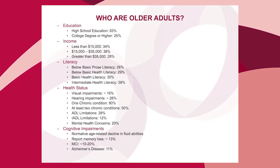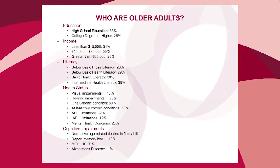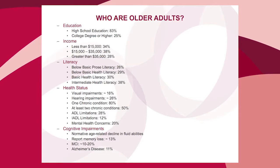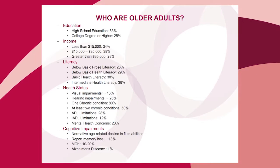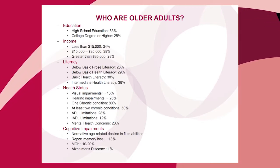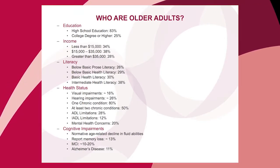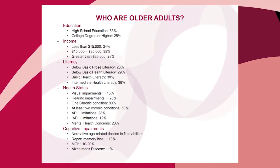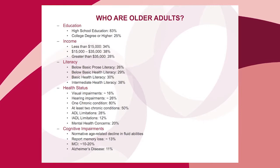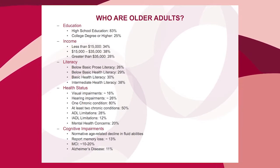On health status, people have varying limitations, disabilities, and chronic conditions, creating complexity for design. These conditions increase with older cohorts. One thing that is sometimes overlooked is that mental health issues are also important — about 20 percent of people over 65 have some kind of mental health concern.